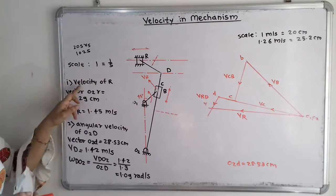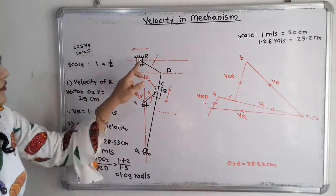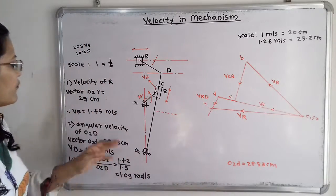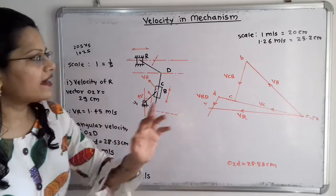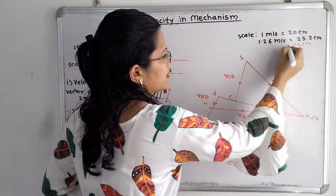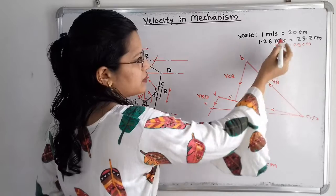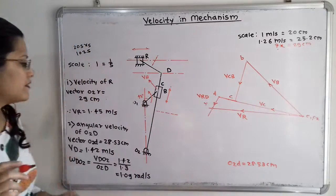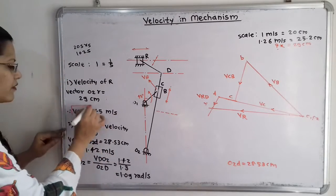The first question is to find the velocity of RAM R. It is reciprocating motion with respect to the fixed point, so we measure vector O2-R. The length of O2-R is 29 cm. Using the scale 1 m/s = 20 cm: cross multiplication gives X = 29/20 = 1.45 m/s. So V_R = 1.45 m/s. This is the answer for the first question.